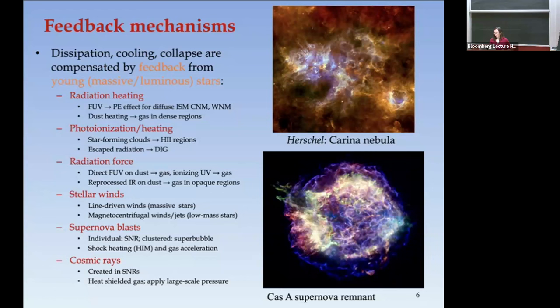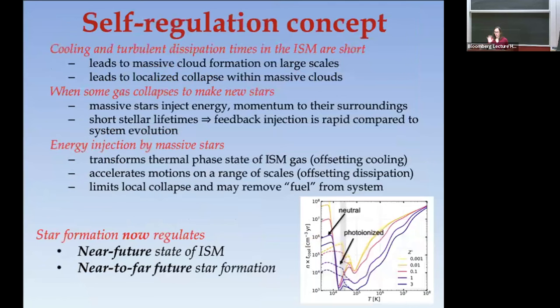Before going into details, I want to describe the overall concept of self-regulation. The basic idea is that the cooling time and turbulent dissipation times are short. What I'm showing here is cooling time times density — divide by density to get the cooling time in years. Those timescales are pretty short compared to any galactic timescale: a million years in the warm gas, a factor of 100 less in the cold gas.